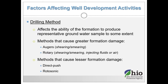Drilling methods affect the ability of the formation to produce representative groundwater samples. Some methods cause greater formation damage — augers or rotary drilling shear and smear the formation next to the well, and rotary may inject fluids or air. Generally those techniques are not used for monitoring wells anymore. Methods that cause lesser formation damage would be direct push and rotasonic, although they still cause some damage and the need to develop is still there.